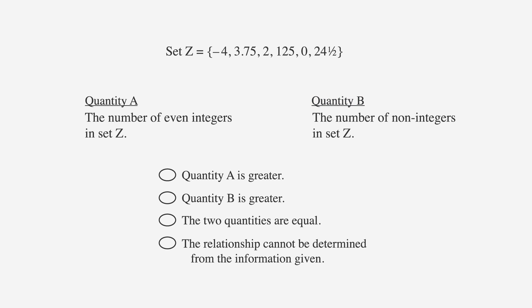The answer choices are the same as in all the quantitative comparisons. The first choice means that quantity A is greater, while the second choice means that quantity B is greater. The third choice means that both quantities are equal, and the last choice means the relationship cannot be determined from the given information.